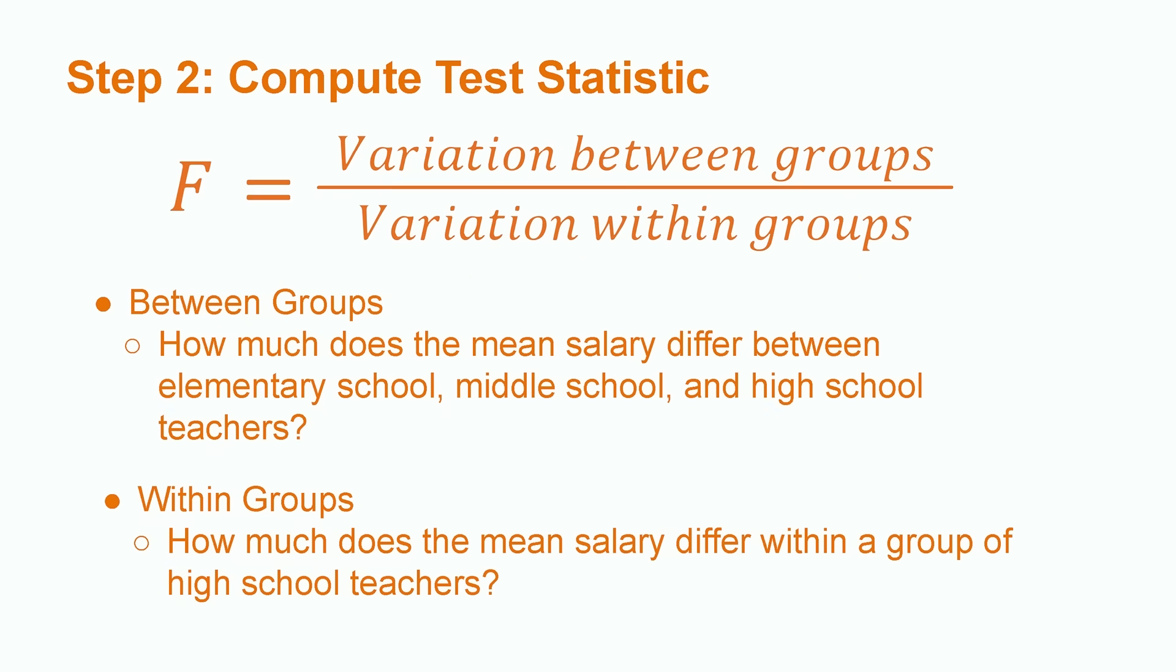ANOVA F-tests use an F-test statistic, hence the name ANOVA F-test. Variation between groups refers to how different each mean is across all groups. For example, how different salaries are between elementary school, middle school, and high school teachers.